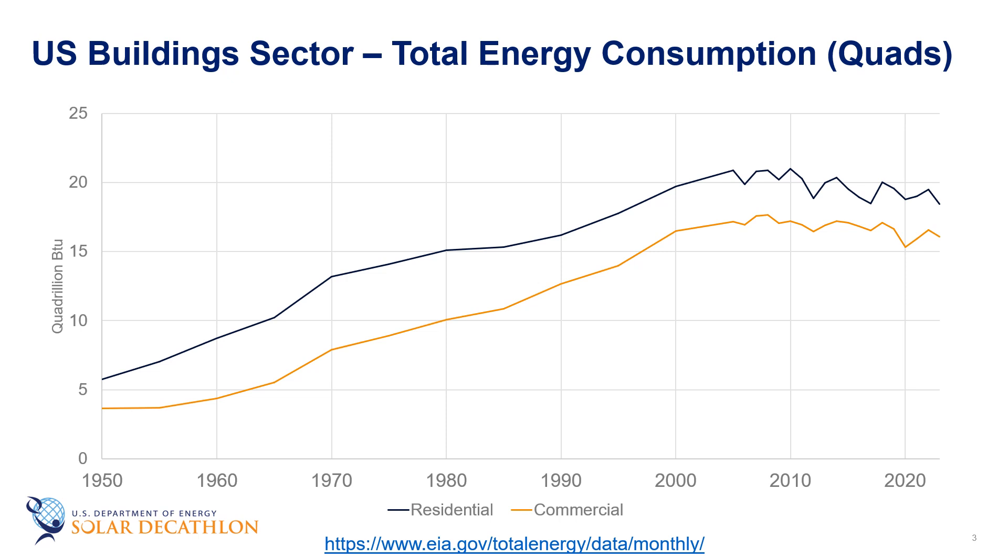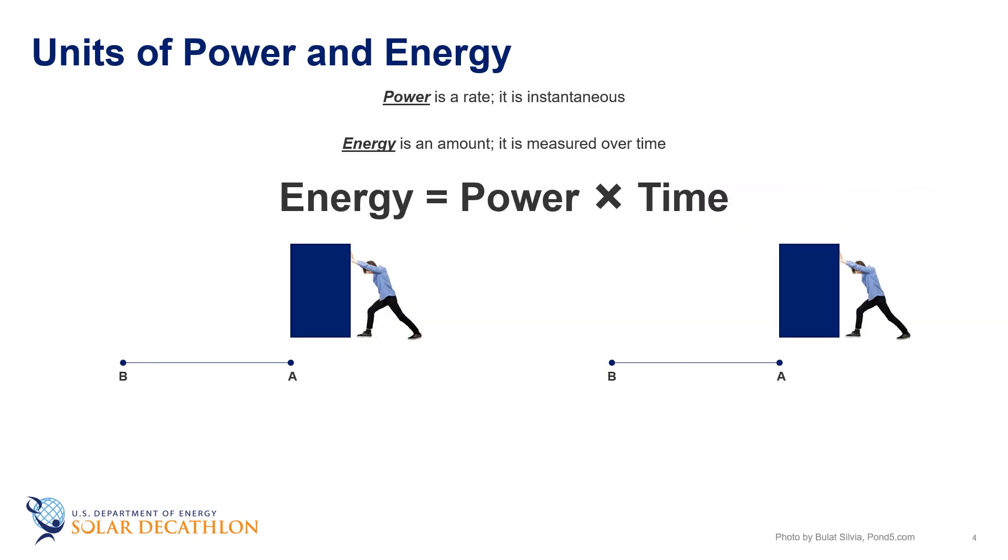In other episodes we have used this graph to talk about how much energy buildings use and how that energy has increased over time but we really need to understand what energy is in order to figure out how to save it. So there are two concepts from physics, power and energy, that often get used interchangeably in the English language but they're really different things and we need to think about them as different things.